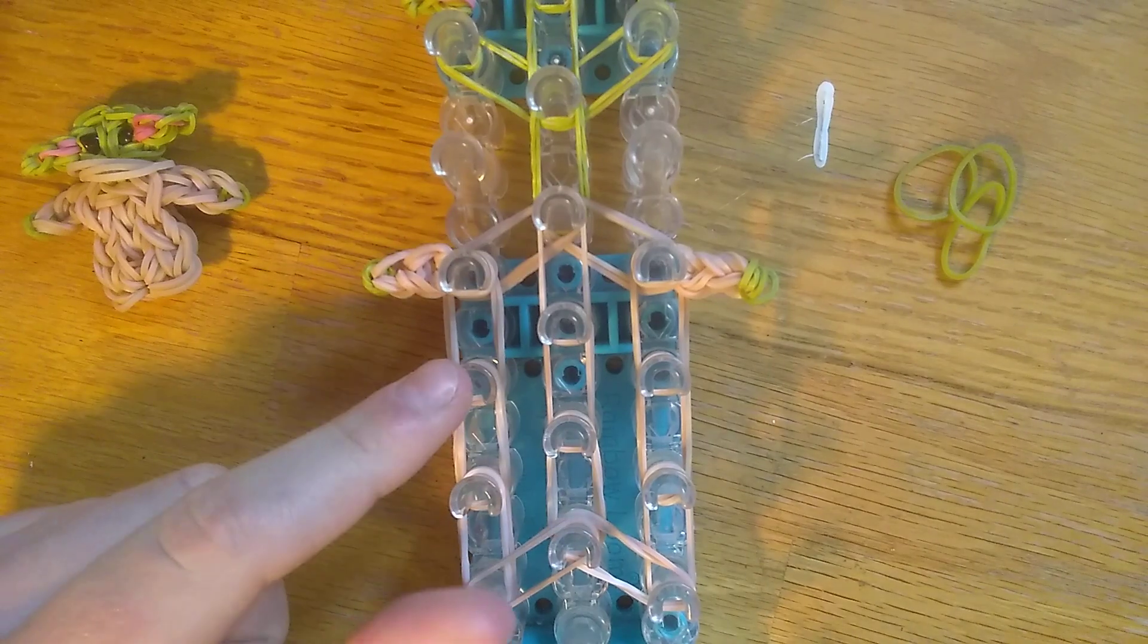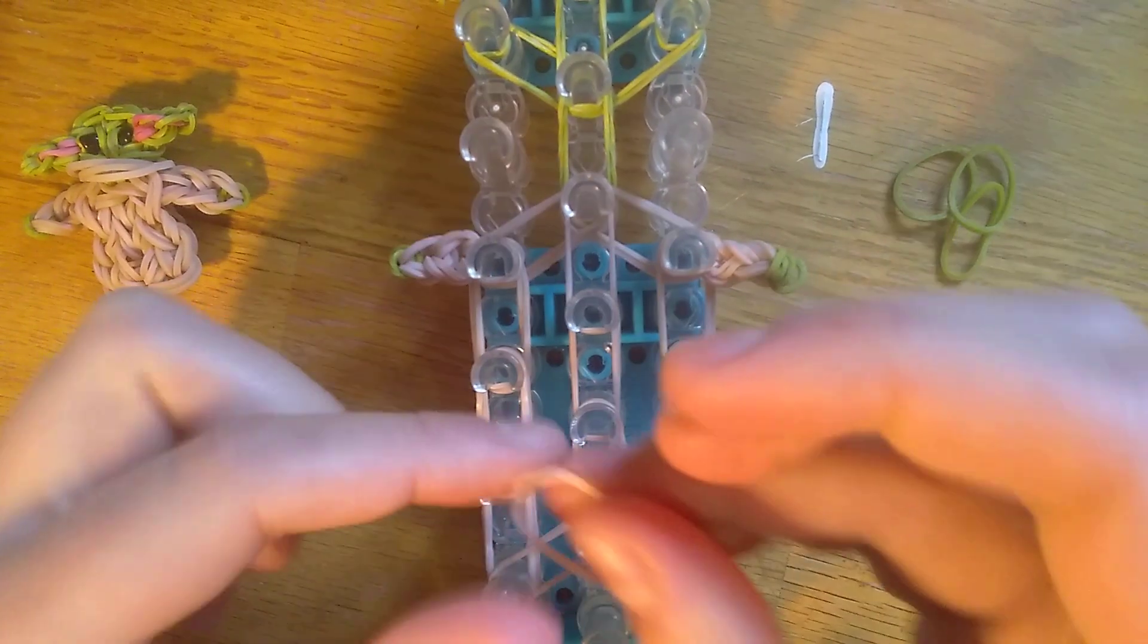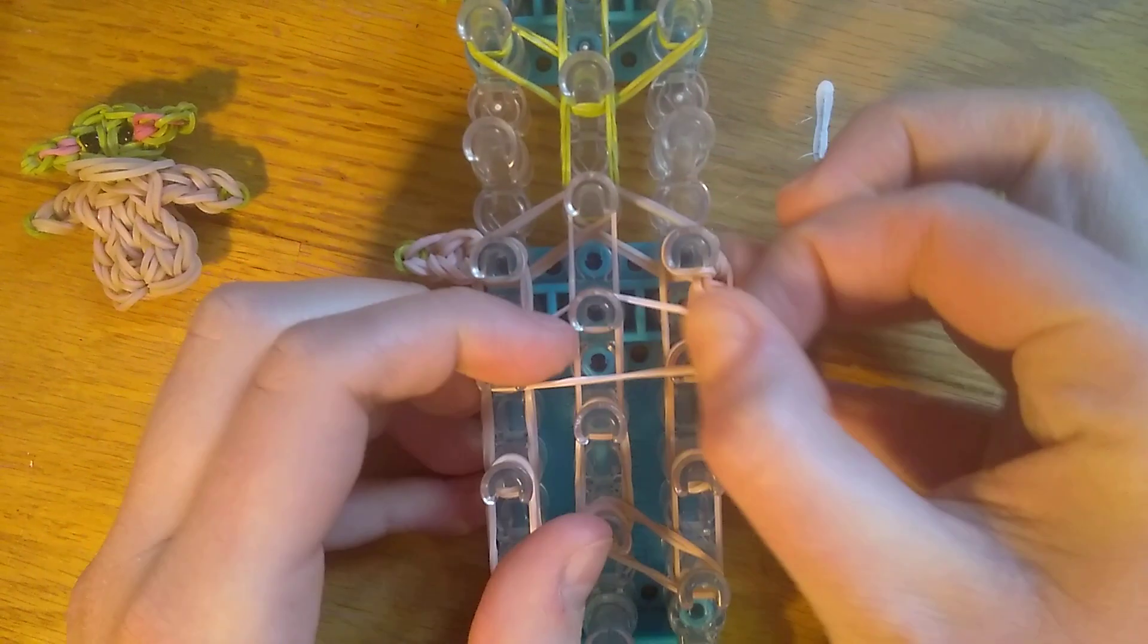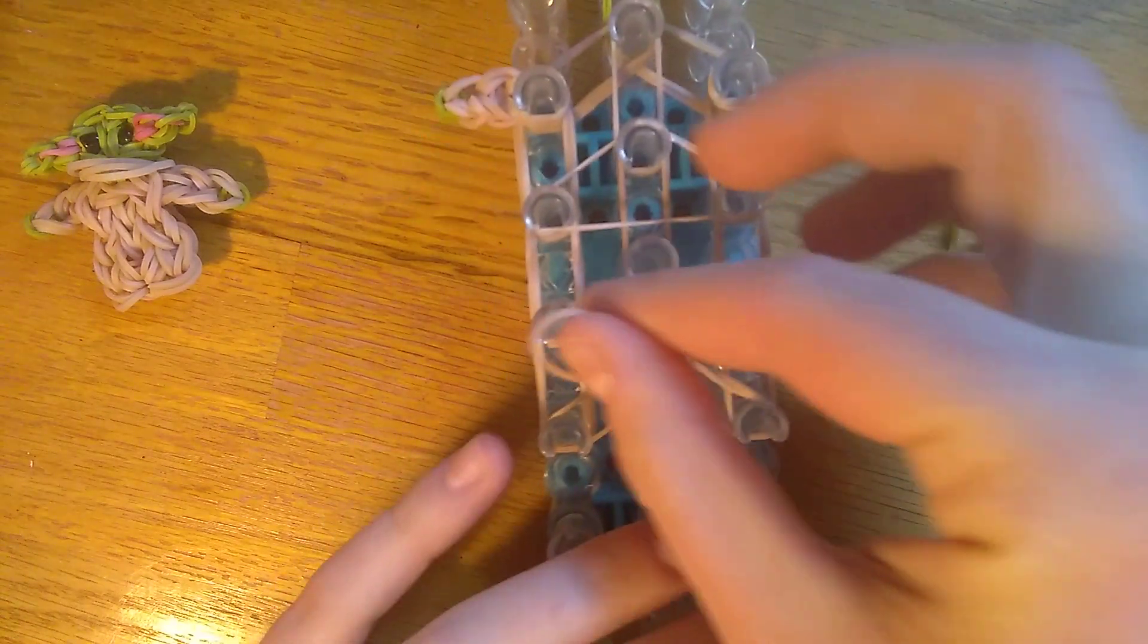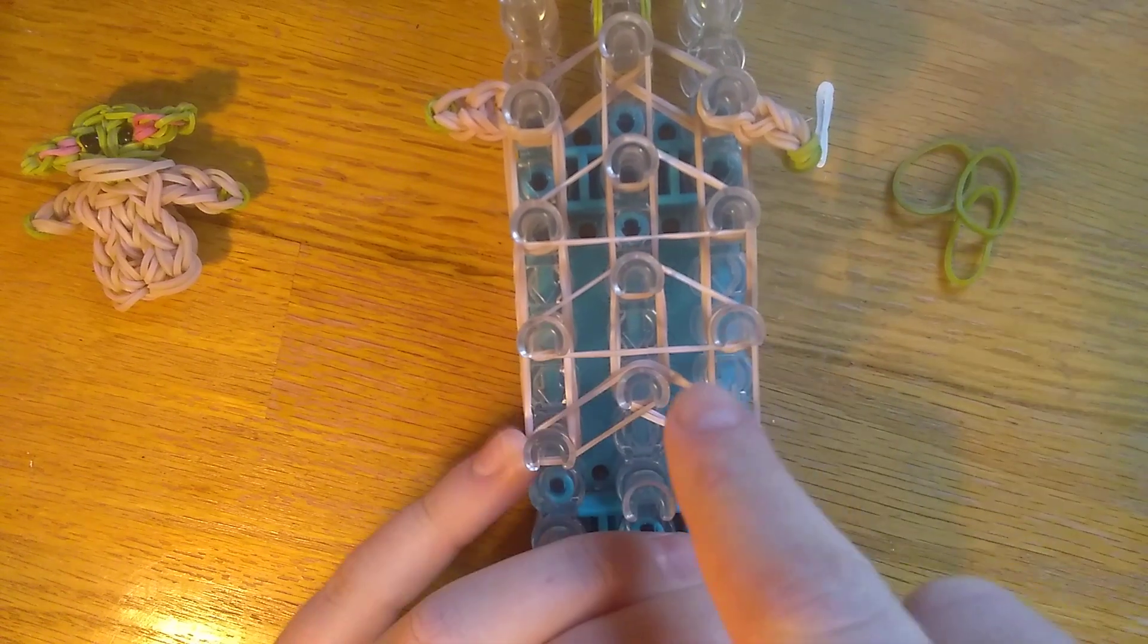Alright. So we'll do the crossover bands on the body. So there's two sets of triangles. So the top one I'm doing a double looped band across all three. And then the bottom I'm just doing a single band across all three. Not double looped. Just placed like that.